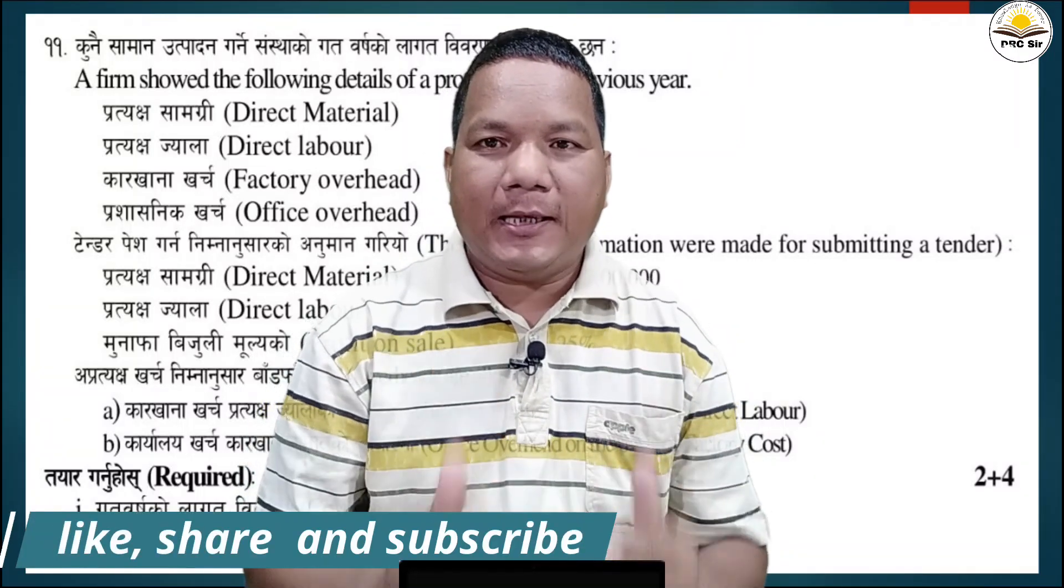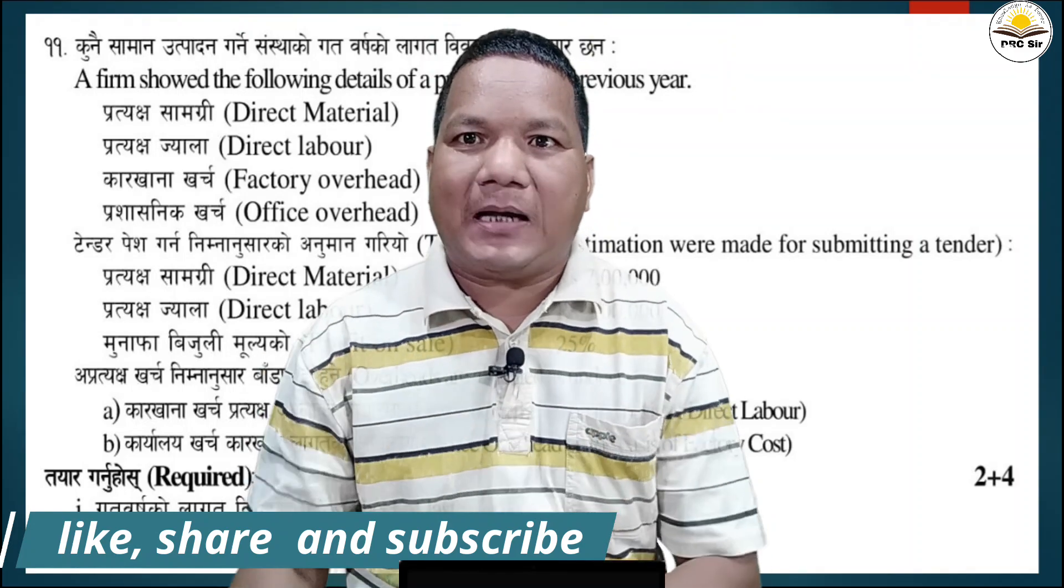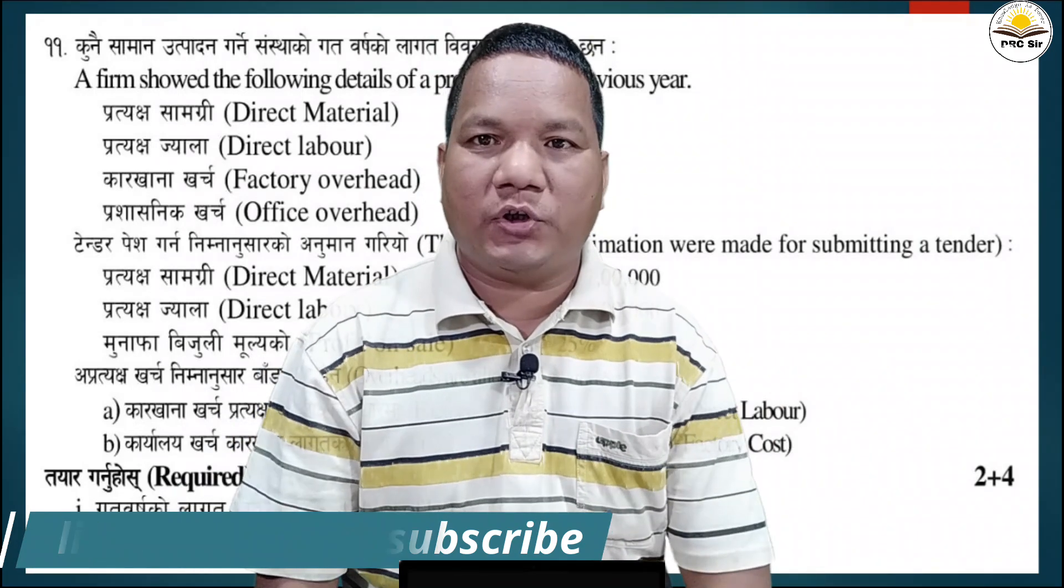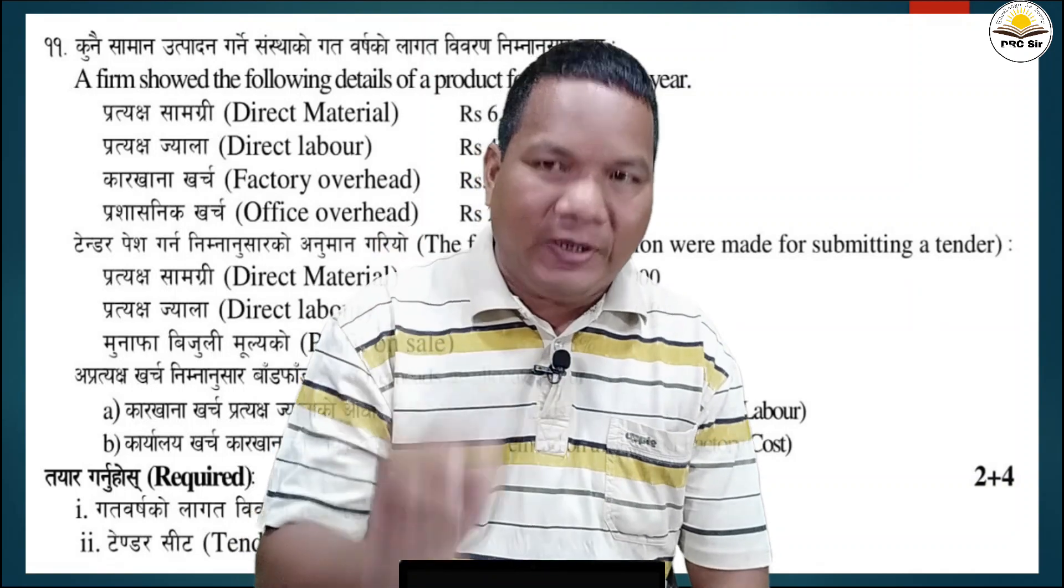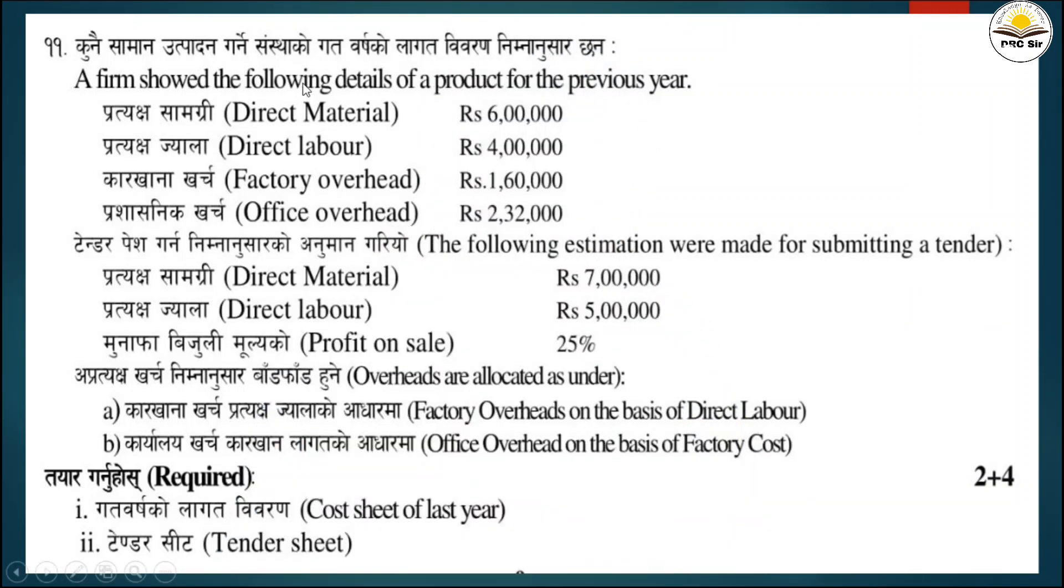Morning friends, this is a model question from the 2077 exam collection. We will solve question number 11. The question shows the following details of a product for the previous year: direct material 6 lakh, direct labor 4 lakh, factory overhead 1 lakh 60 thousand, and office overhead 2 lakh 32 thousand.